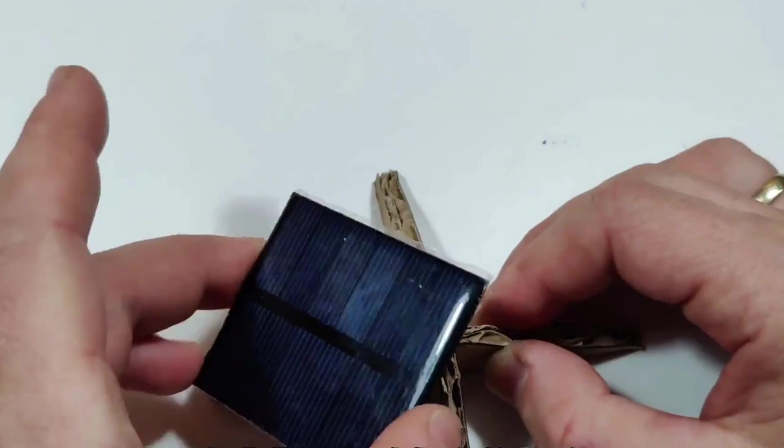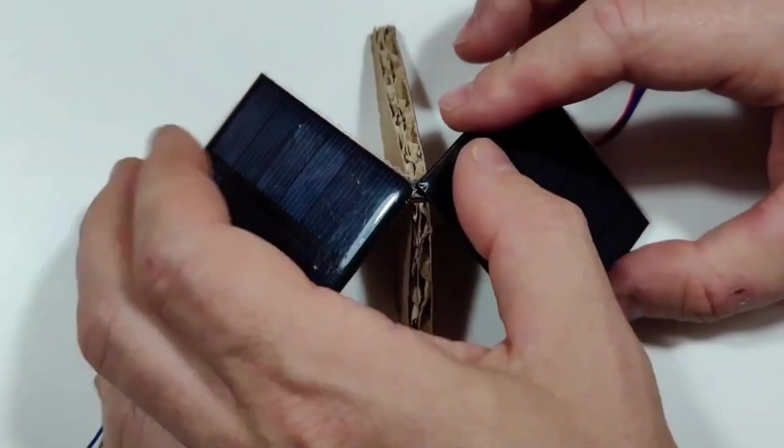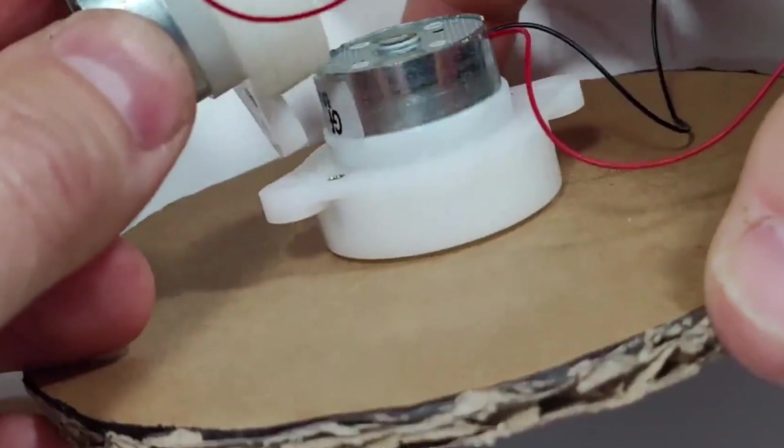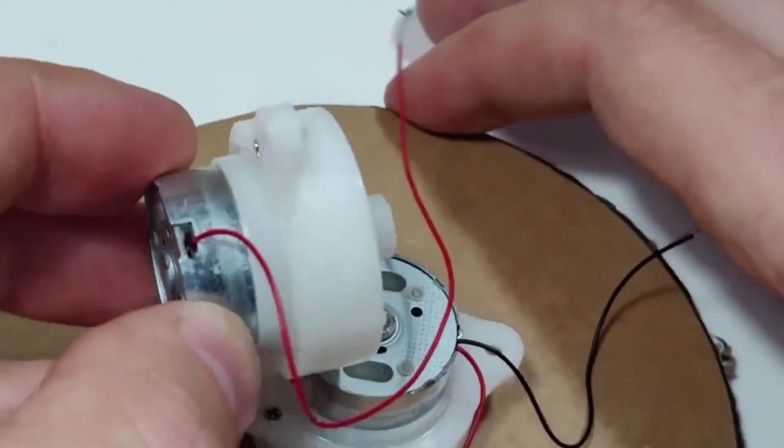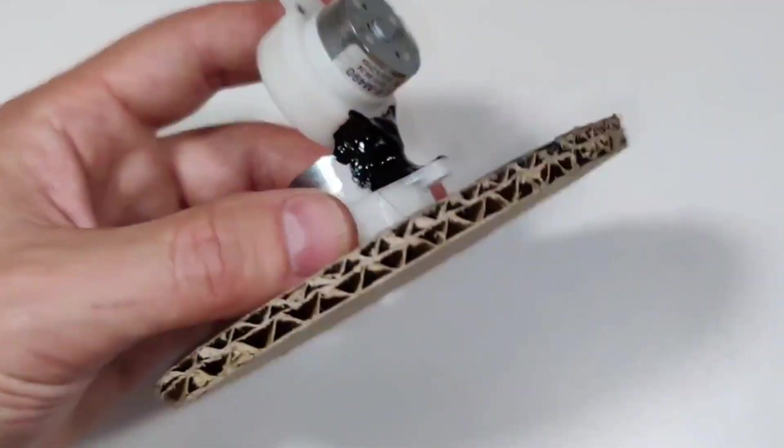Glue one solar panel to each side of the triangle using hot glue. Then, take the second motor and mount it vertically so it can control the up and down movement, the vertical tracking of the sun.